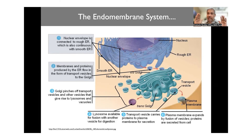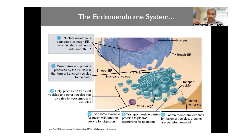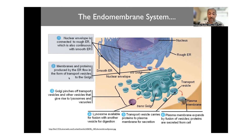Not only is where these proteins originate and how they move important, but the rate at which they do this also becomes particularly important. The Golgi pinches off transport vesicles — things that are carried to the plasma membrane — but these can also give rise to lysosomes and vacuoles. Lysosomes are available for fusion with other vesicles and play an important role in digesting components and content present in other vesicles.